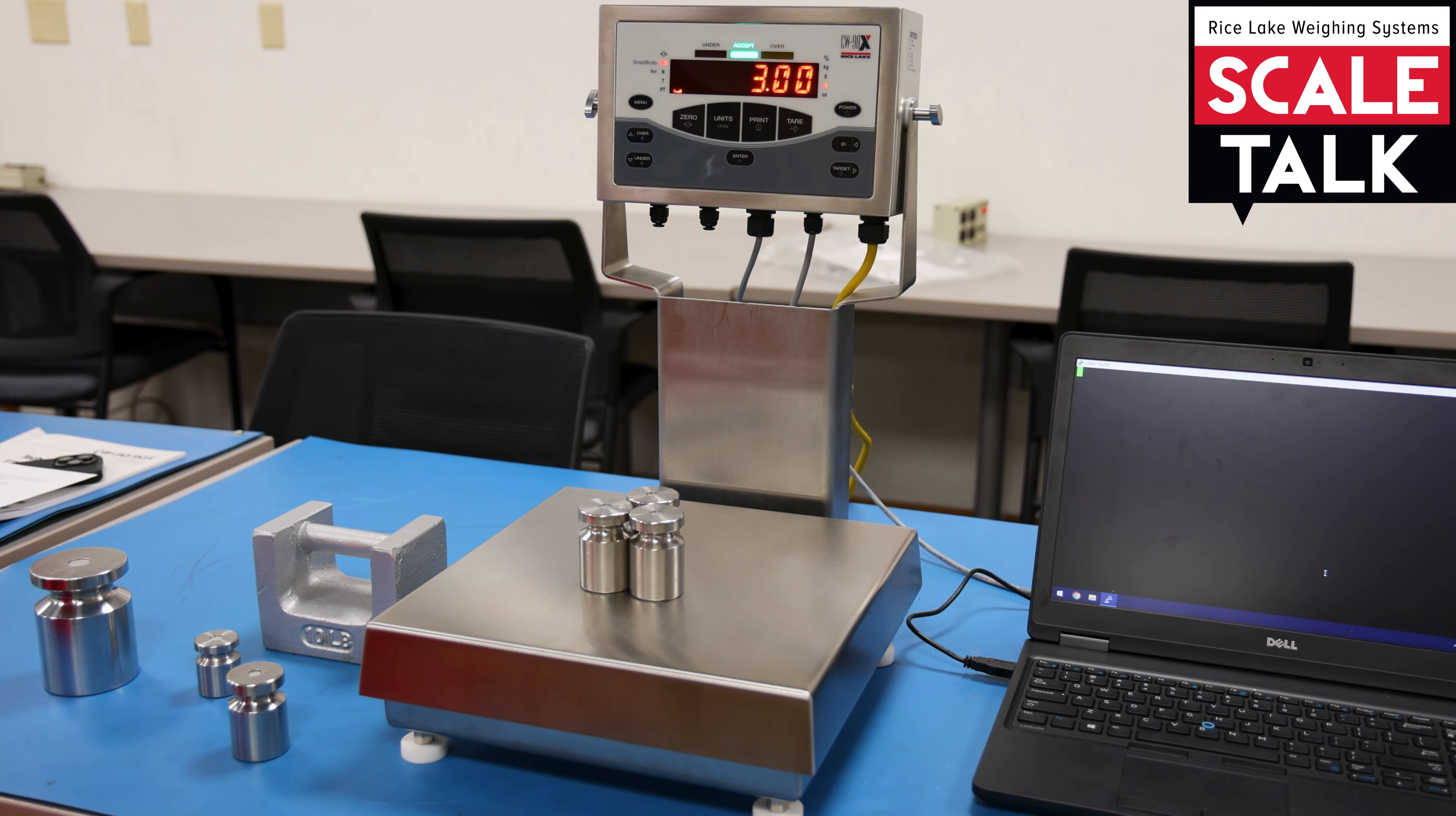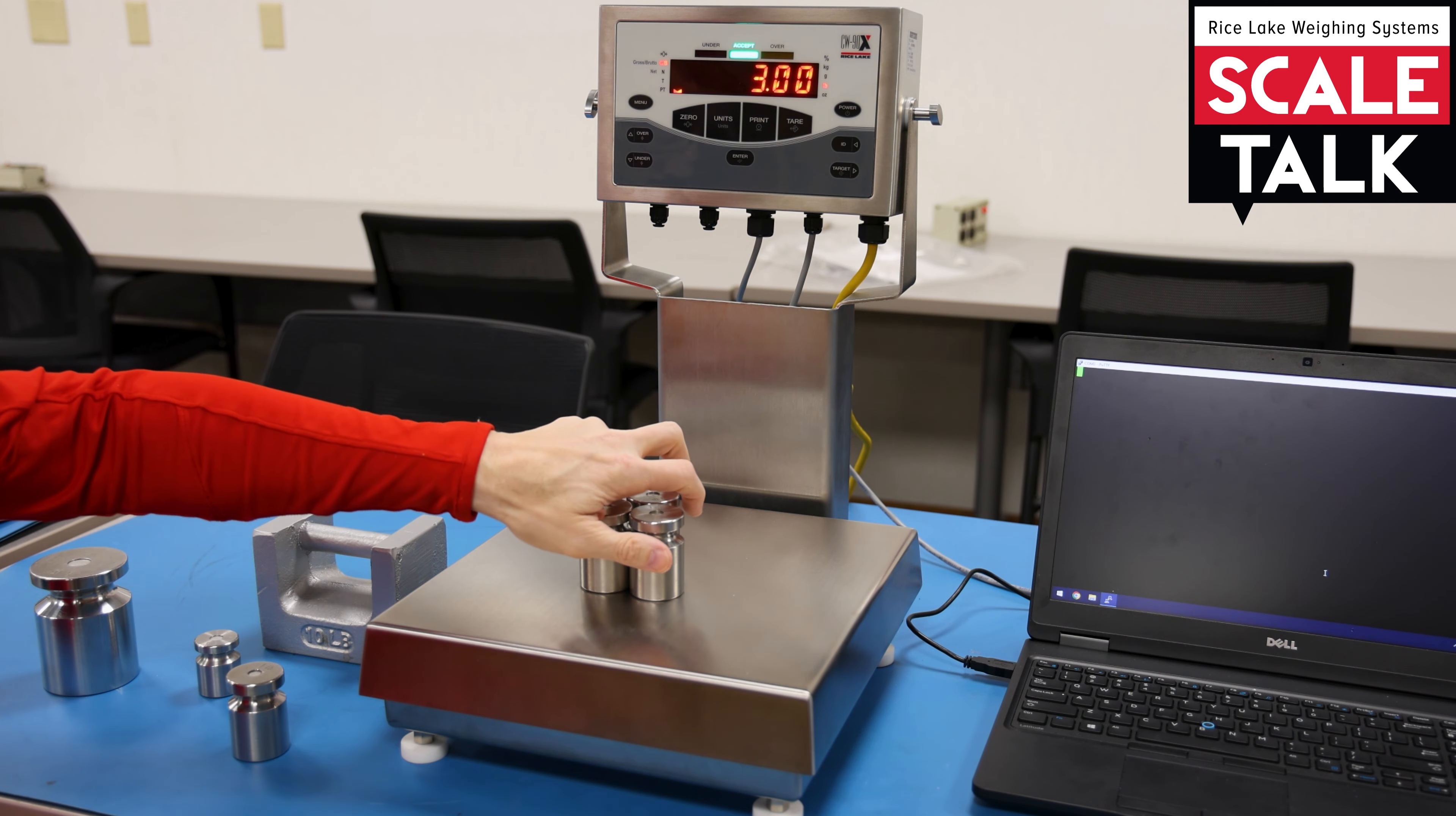So again, this is the default setup for the CW90X. This is the range feature where we're simply setting up a particular window under which the weights will be accepted.